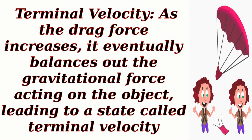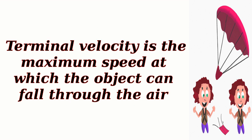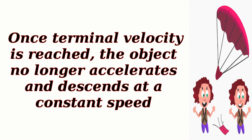Terminal velocity: As the drag force increases, it eventually balances out the gravitational force acting on the object, leading to a state called terminal velocity — the maximum speed at which the object can fall through the air. Once terminal velocity is reached, the object no longer accelerates and descends at a constant speed.